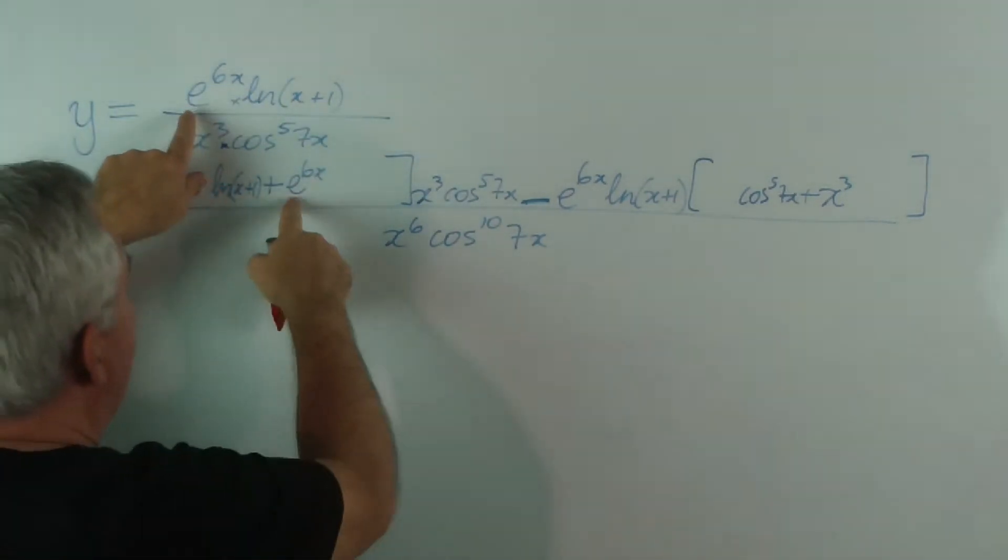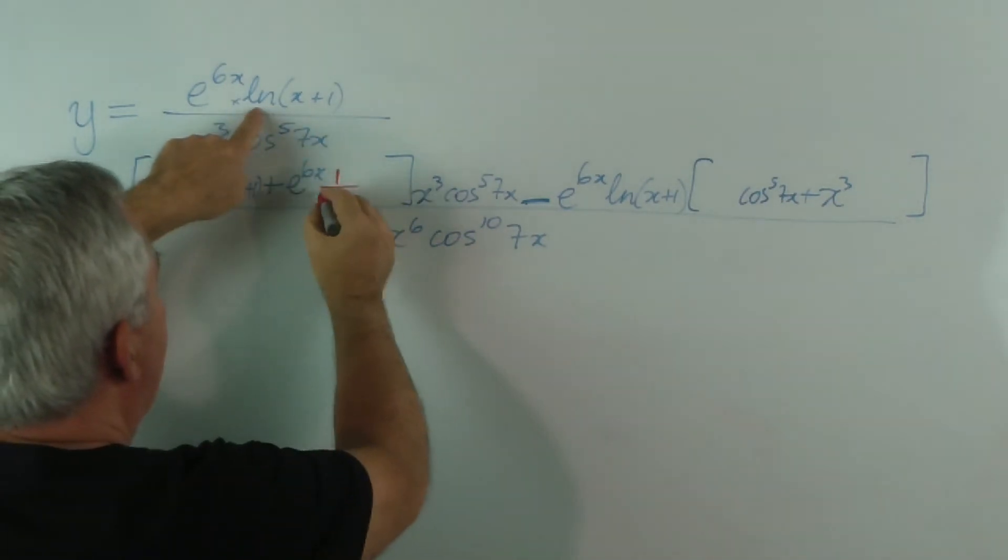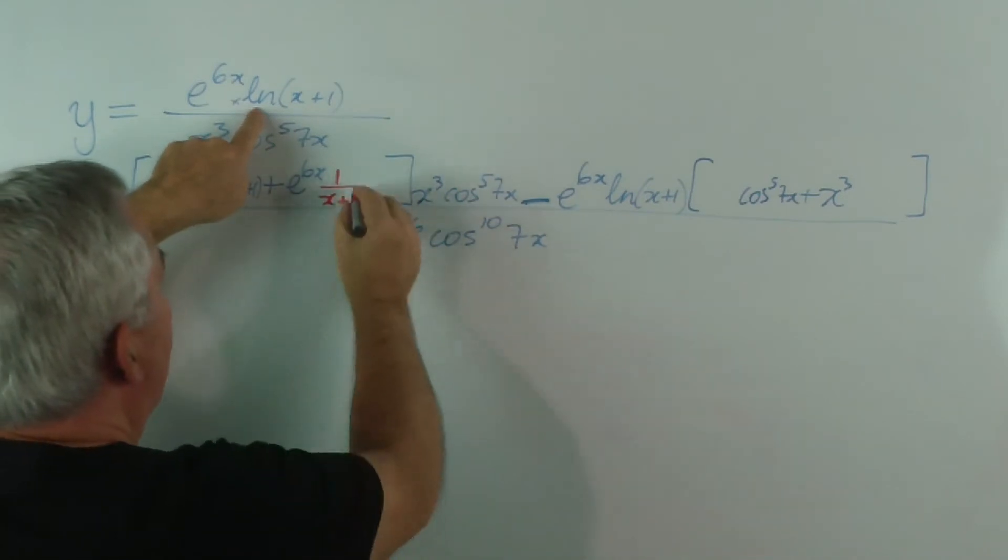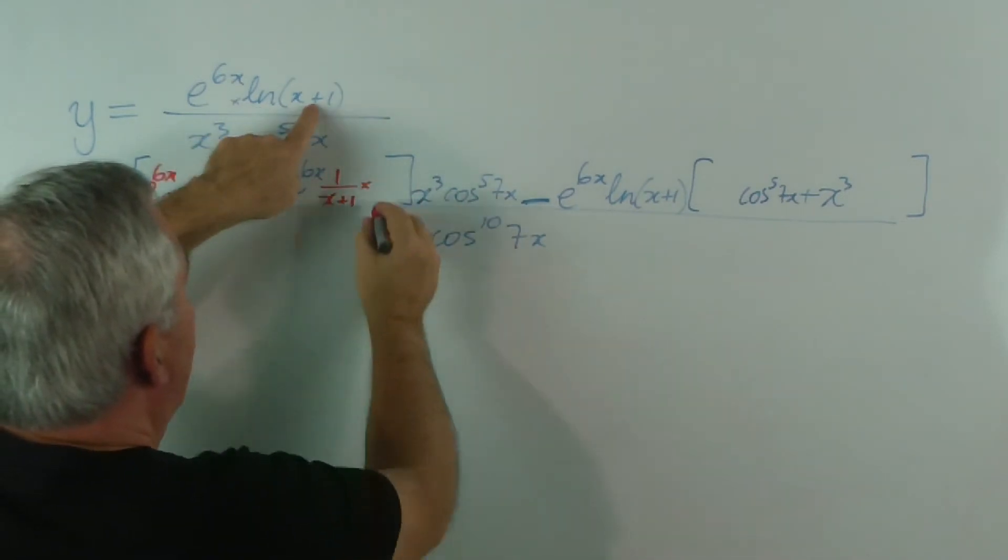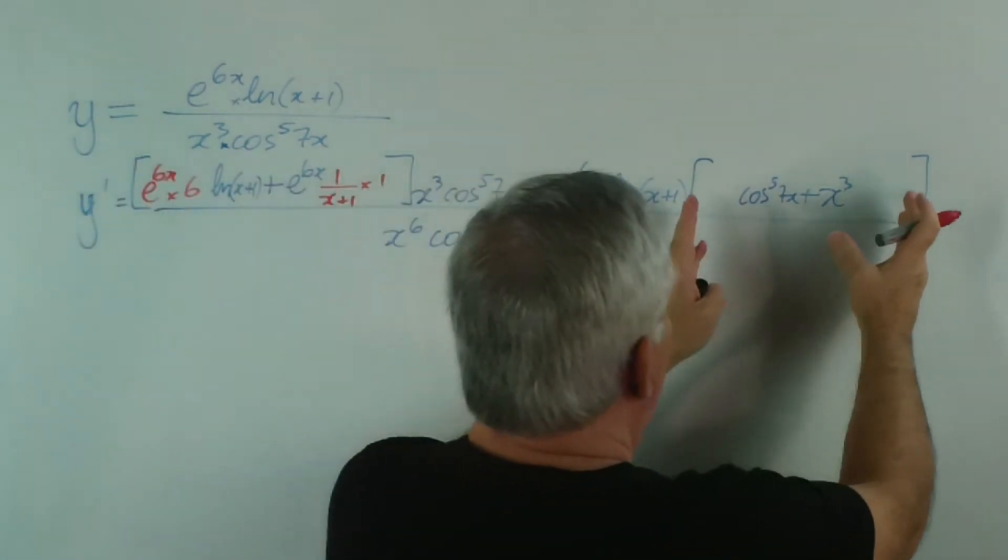Then I leave this alone and I find the derivative of log. Well, the derivative of log is 1 over whatever's inside, times the derivative of whatever's inside.